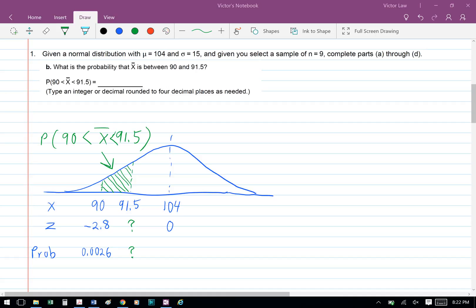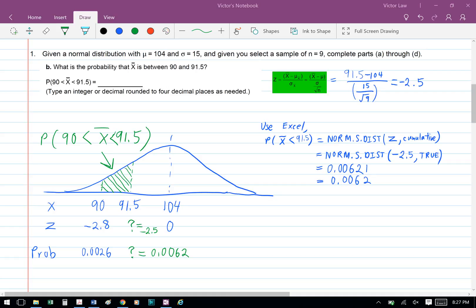To find the probability, we need to first find the z value of 91.5. To find the z value from a sample, we're going to use the formula x bar minus mu divided by standard deviation over square root n.